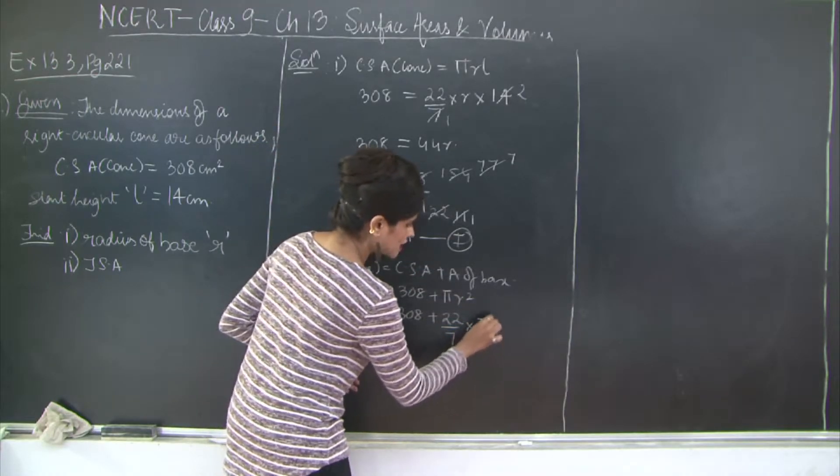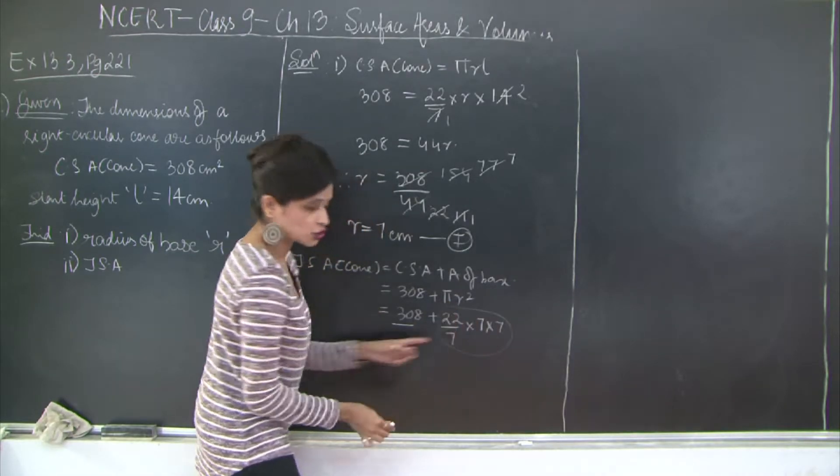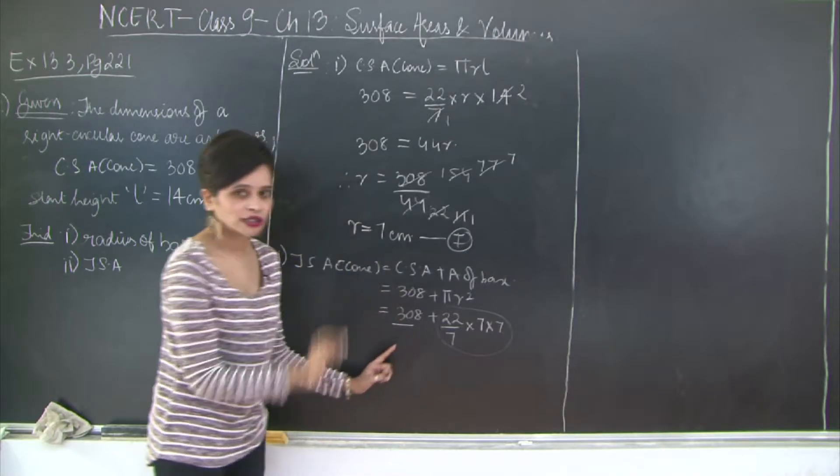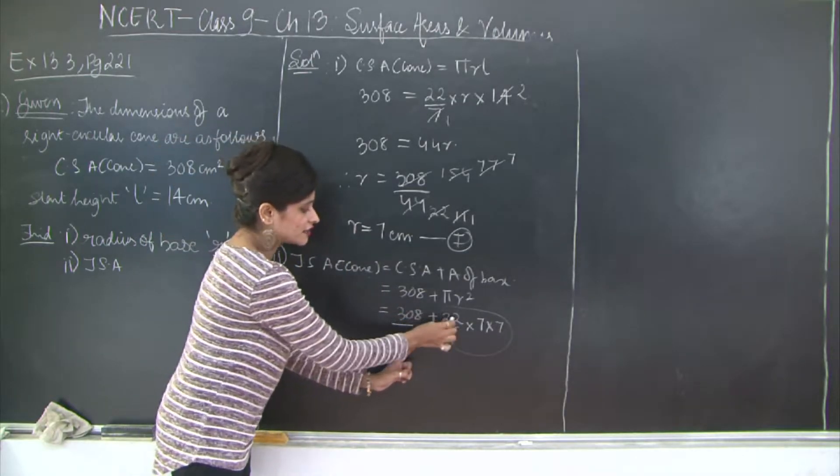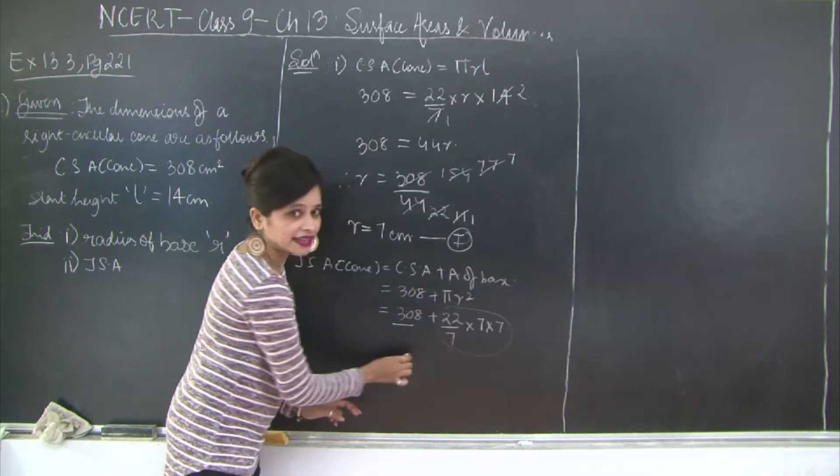So I will write 308 plus 22 upon 7 into r², r is 7 into 7. Now see you have an entire term here. This is one complete term. So you are going to first solve this section and then add it to 308. Do not make the mistake of first adding 308 to 22 by 7. It will all go abrupt.